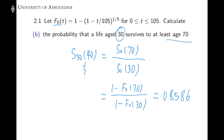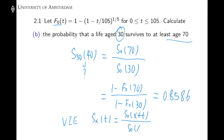Generalizing this, we have this very important expression: the survival probability is F0(x + t) given this person survived x years.